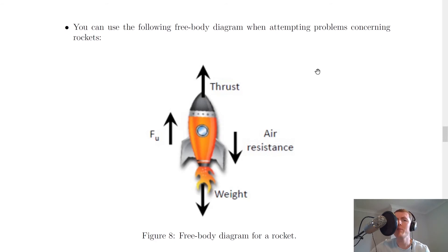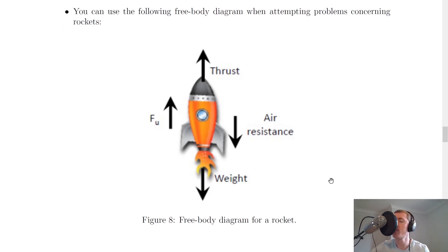Here's a free body diagram that might be useful when you're doing problems involving rockets. And this shows the forces that we were just talking about. We've got the thrust force upwards from the rocket's engines. Once it starts moving, it will have an air resistance downwards as its speed is increasing. And we've got a weight downwards caused by the mass times the gravitational field strength.